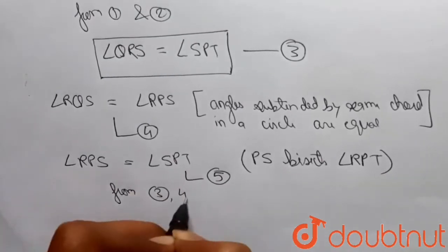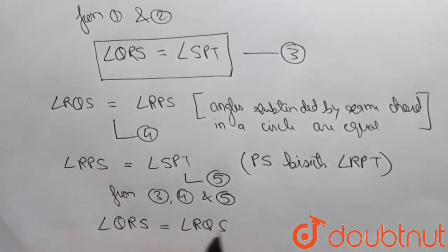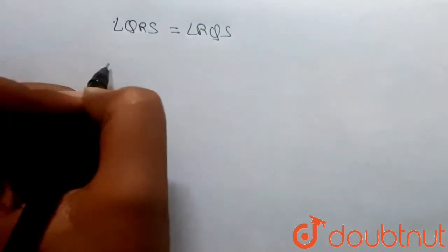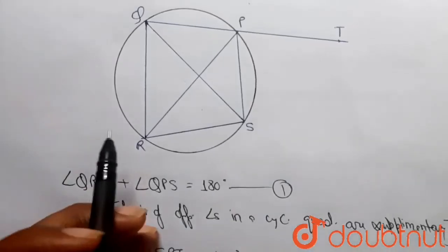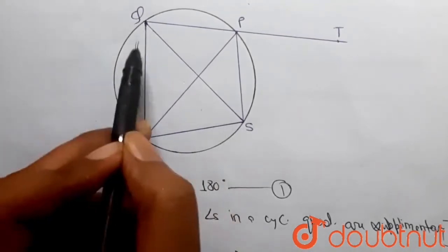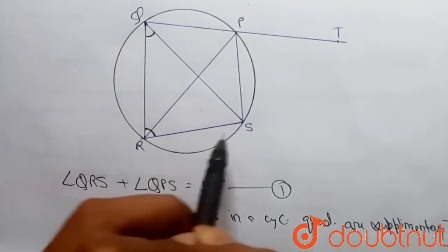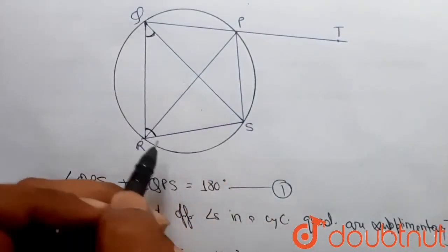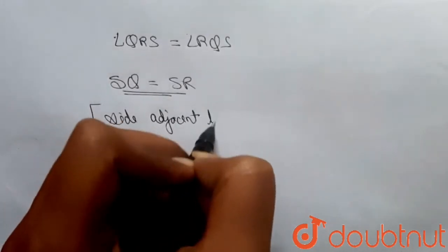From equations three, four and five, we can write that angle QRS is equal to angle RQS. From here, SQ should be equal to SR, because these are the sides opposite to these equal angles. Angle QRS and angle RQS are the two angles, and the sides opposite to these angles are SQ and SR. So if these two angles are equal, then the corresponding sides SQ and SR also have to be equal. Hence SQ equals SR, because sides opposite to equal angles are equal.